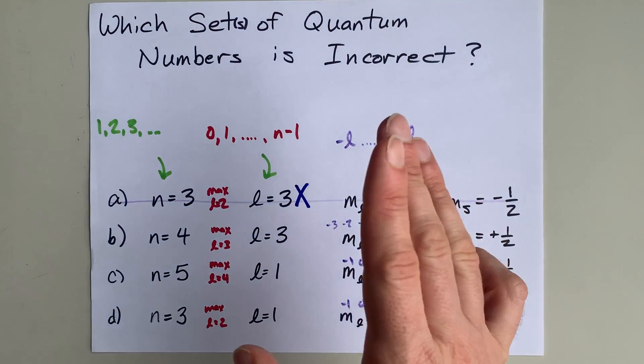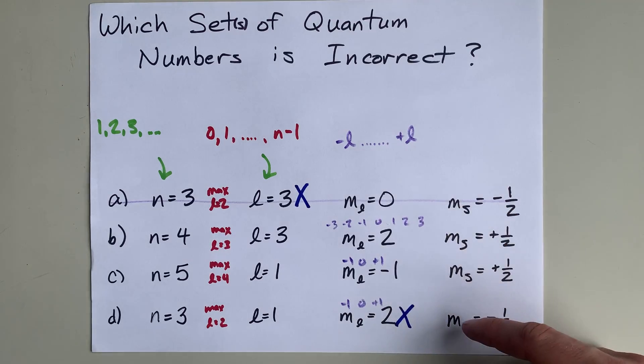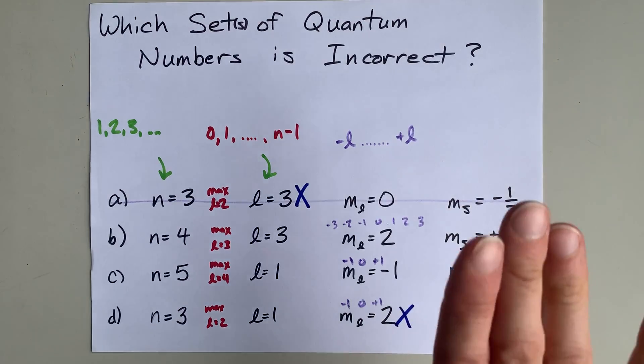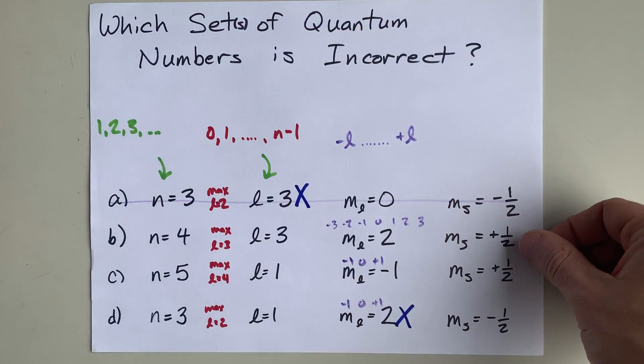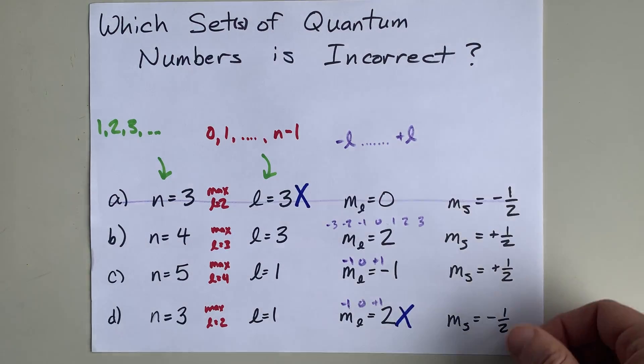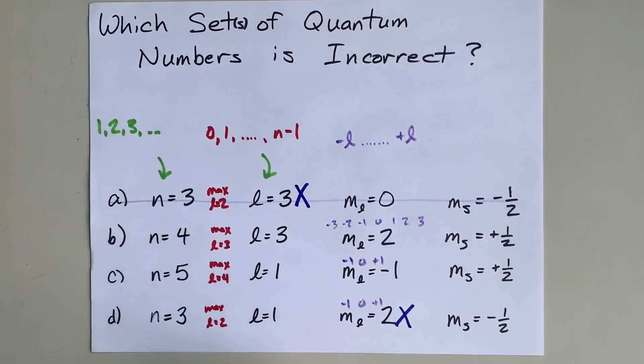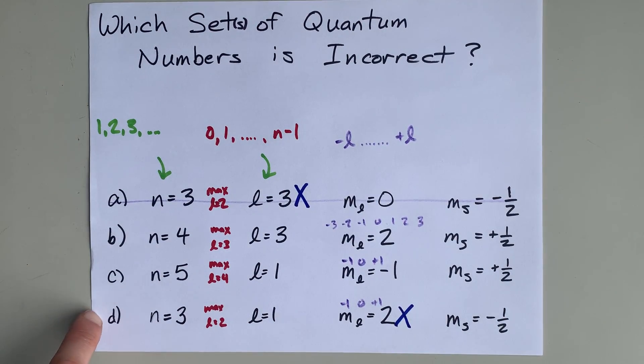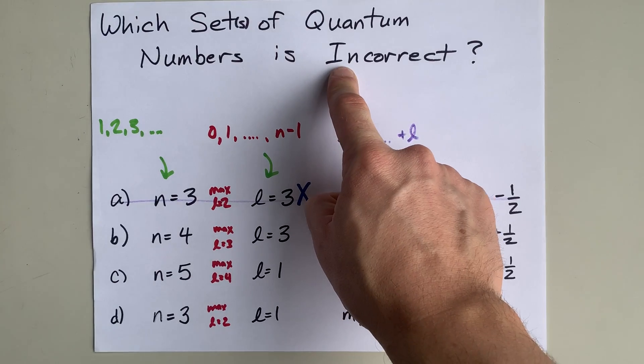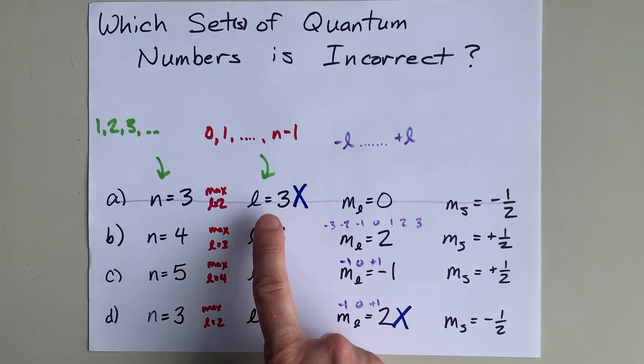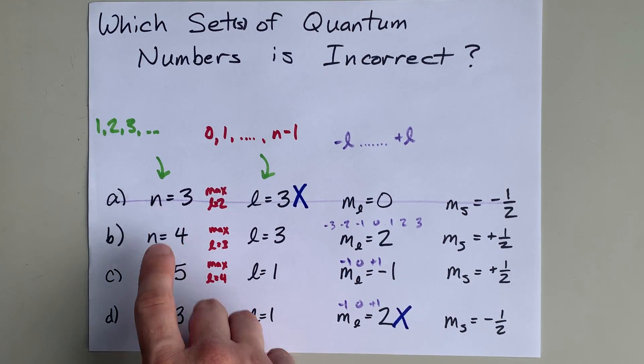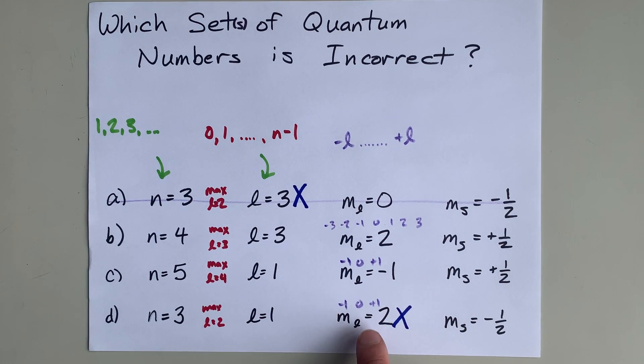The only other restriction is that MS, the spin quantum number, has to be plus a half or minus a half. And all of these are, so none of these are illegal either. The answer to my question is A and D. They are incorrect. But that's because this L was too high for that N, and this ML was too high for that particular L.